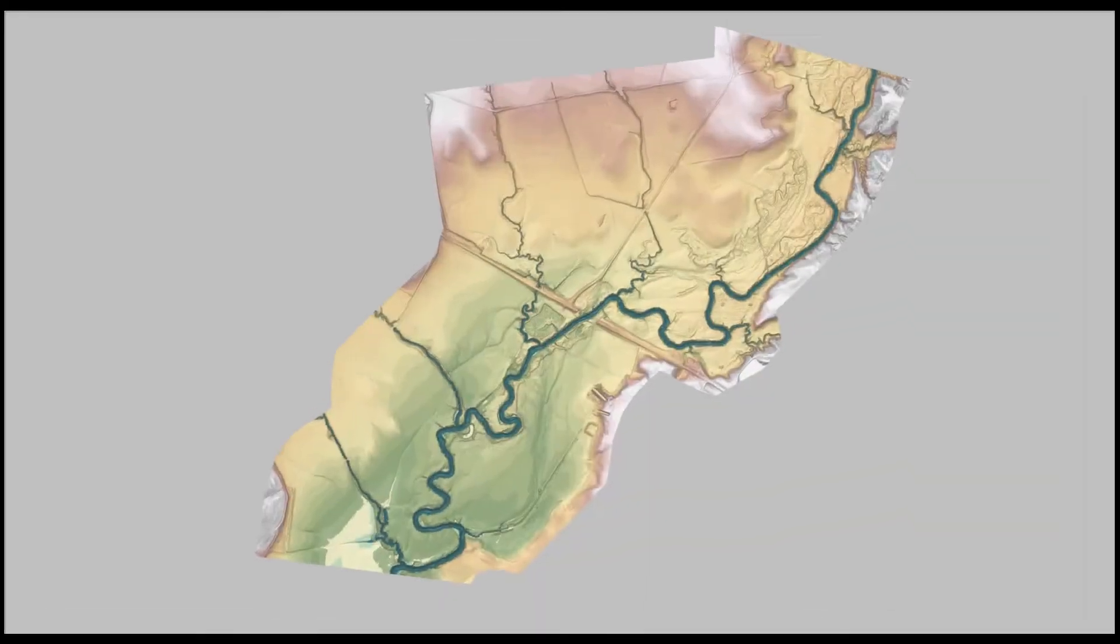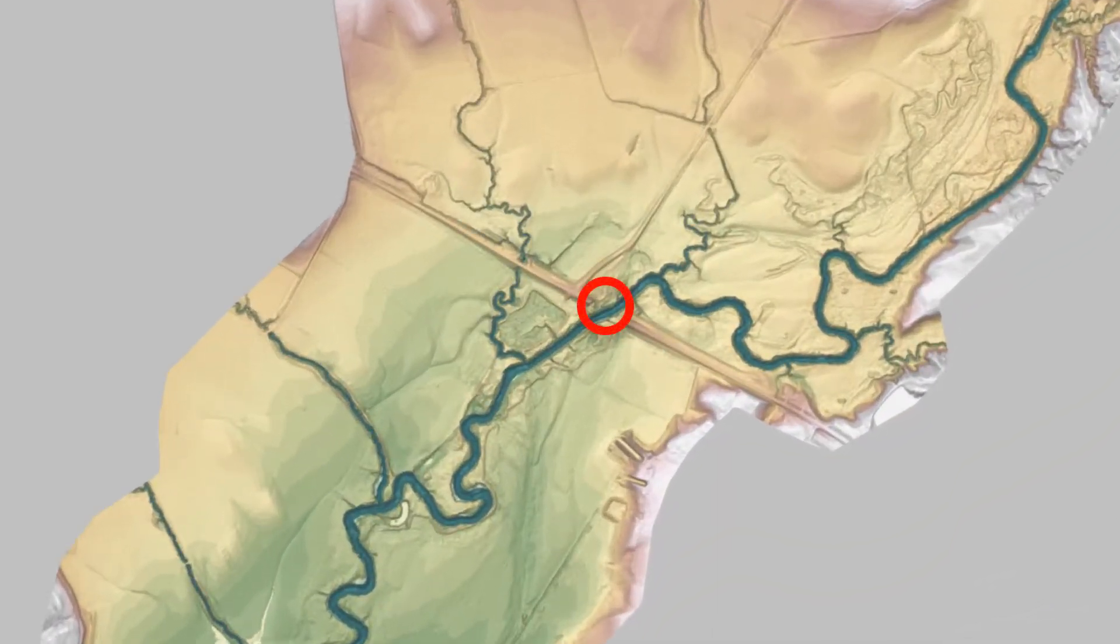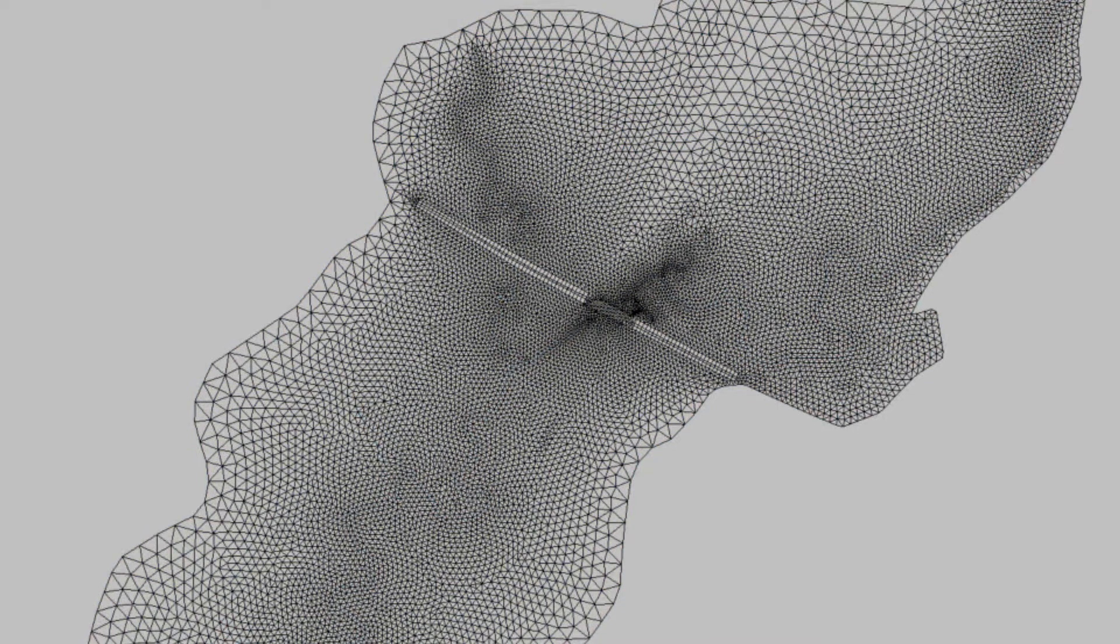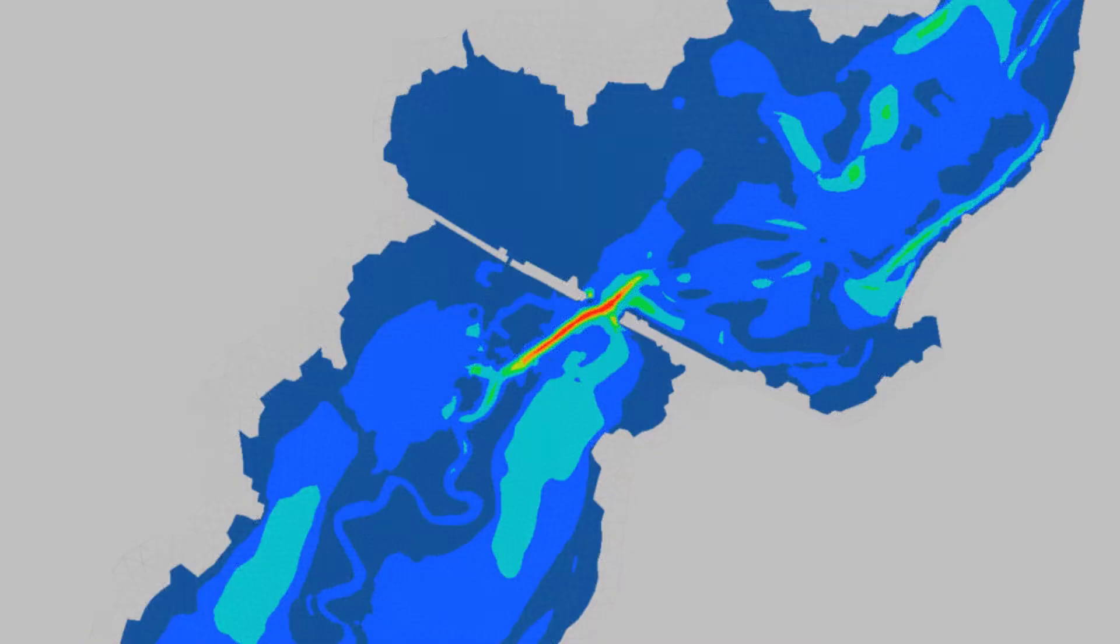Because bridge locations typically cause a constriction in the floodplain hydraulics, relatively small mesh elements are typically warranted at bridge locations due to the rapidly varying hydraulics and interest in more detailed hydraulic results at these locations.